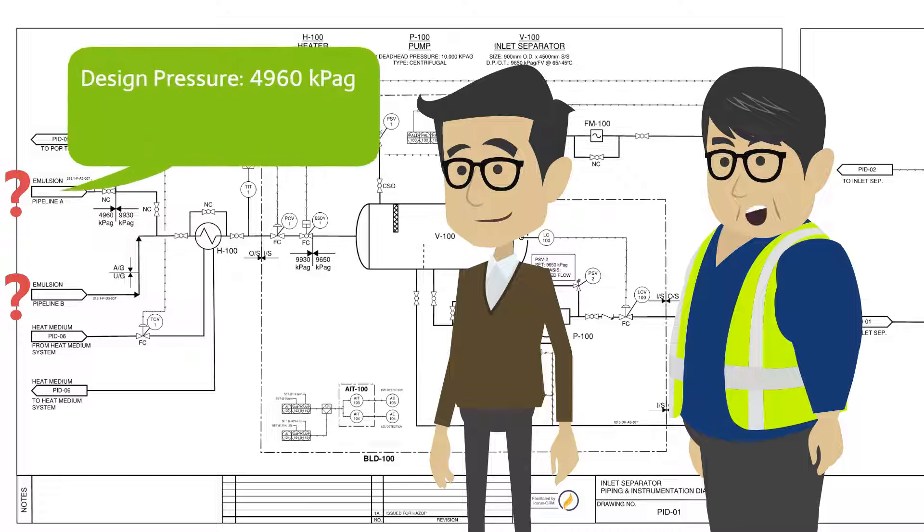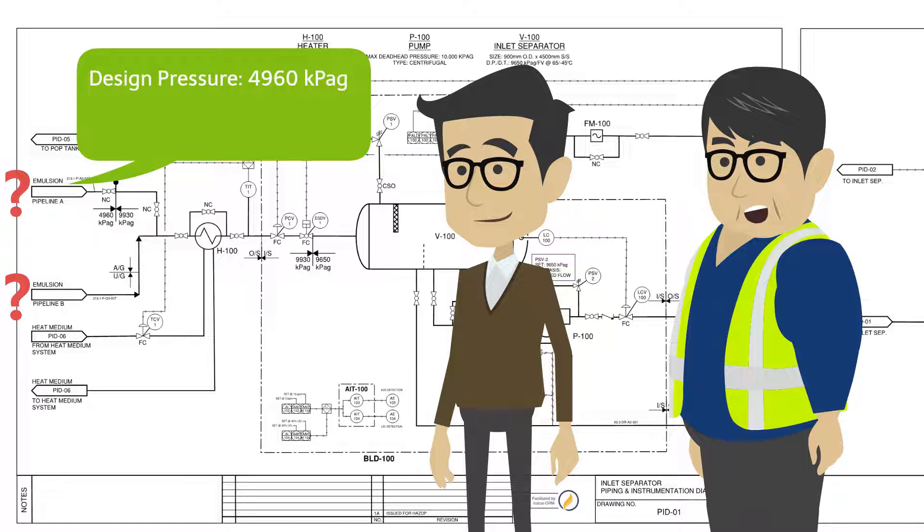The design pressure of the pipeline is 4,960 kPaG, but the maximum incoming pressure we would ever see is 4,000 kPaG, with a maximum incoming temperature of 10 degrees Celsius.